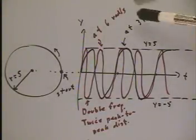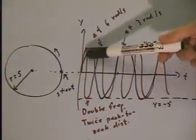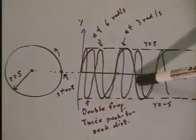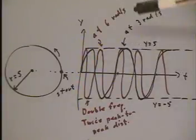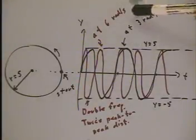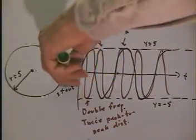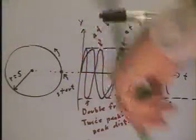Now, if we do this at 3 radians per second, we might get a curve like this. If we do it at 6 radians per second, and you should actually do this and see that it really does work out, we're going to go around the circle twice as fast as before.